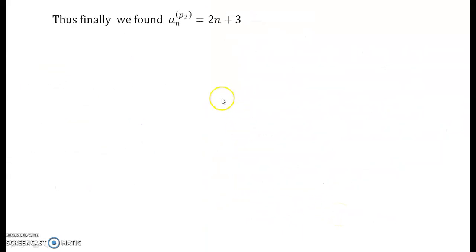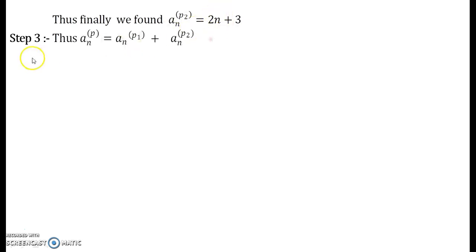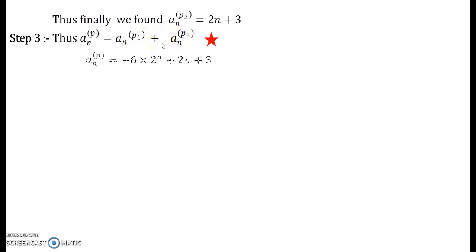Thus the particular solution for the second part f2 is a_n^(p2) equals 2n plus 3 — that is b1·n + b0 with b1 = 2 and b0 = 3. Your total particular solution is a_n^(p) equals a_n^(p1) plus a_n^(p2): add those two particular solutions to get your final particular solution.